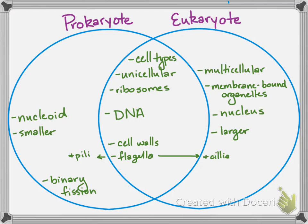Prokaryotes divide by a process called binary fission, whereas eukaryotes divide by a process called meiosis, which we're going to be learning about later on.